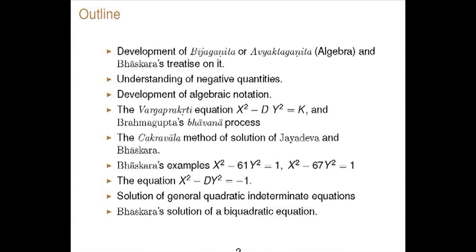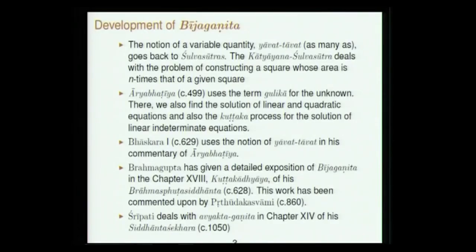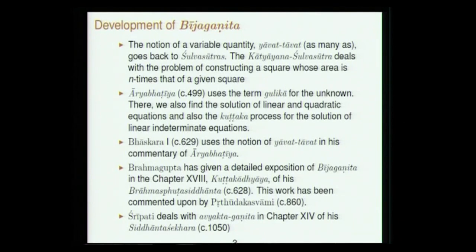The notion of Yavath Tavath for unknown quantity goes back to the Shulva Sutras. Karthiyayana's Shulva Sutra gives how to construct a square which is n times a given square, with n expressed in terms of Yavath. The term Gulika occurs in Aryabhatiya for the unknown, and Aryabhatiya gave the Kuttaka method for linear indeterminate equations. Bhaskara uses the idea of Yavath Tavath in his commentary. Brahmagupta gives a detailed exposition of algebra in the Kuttaka Dhyaya of Brahmasputa Siddhanta in 628 AD.